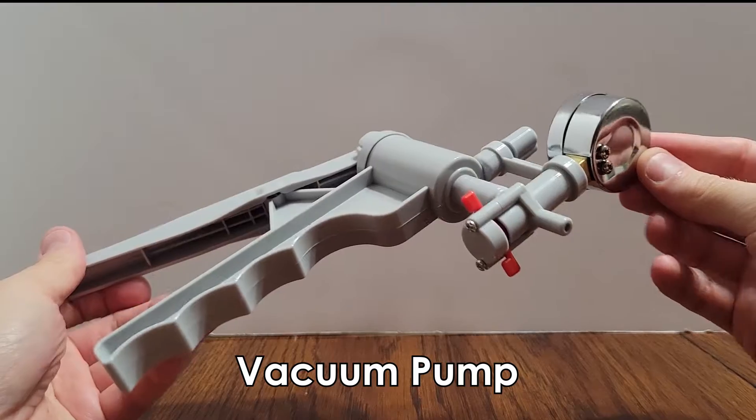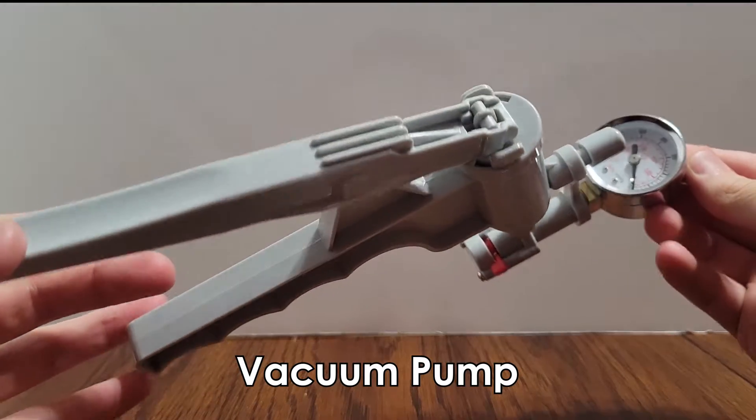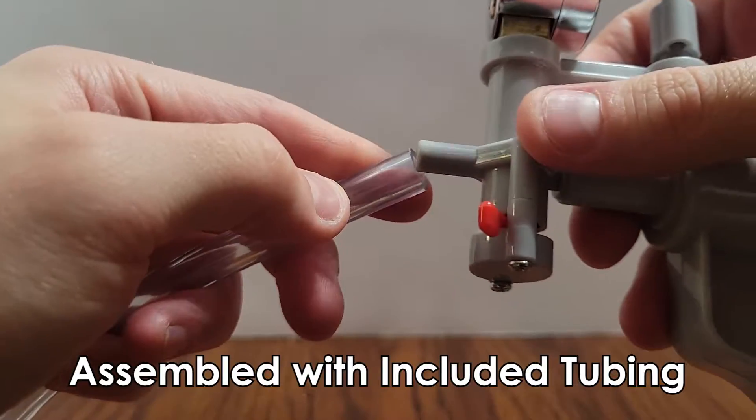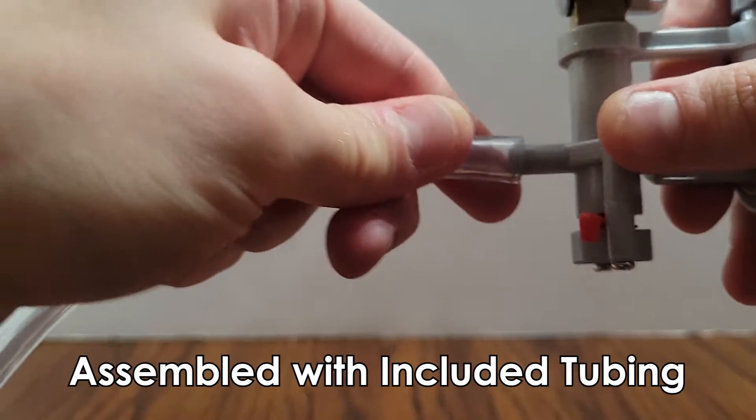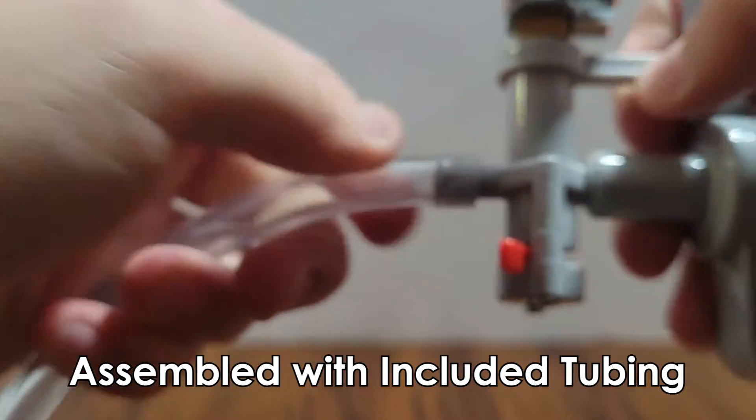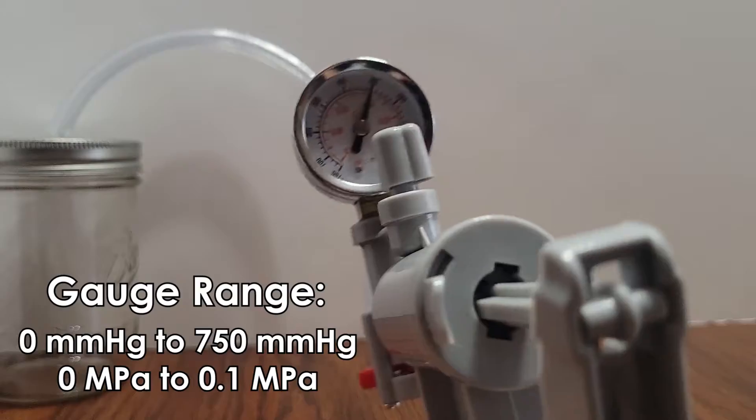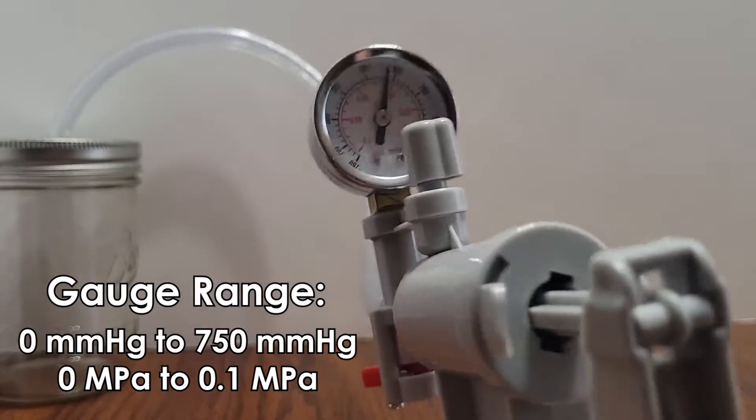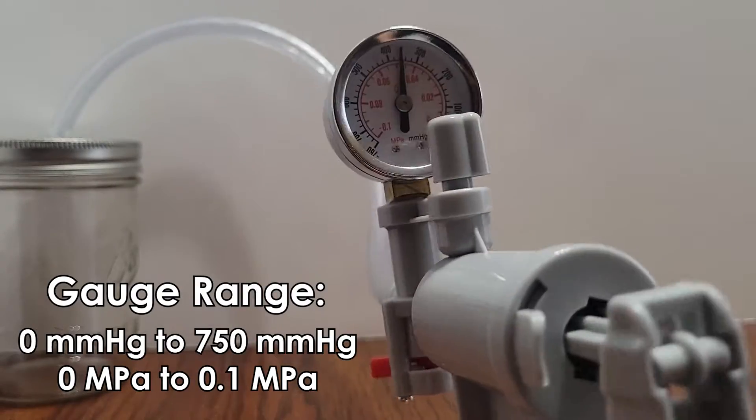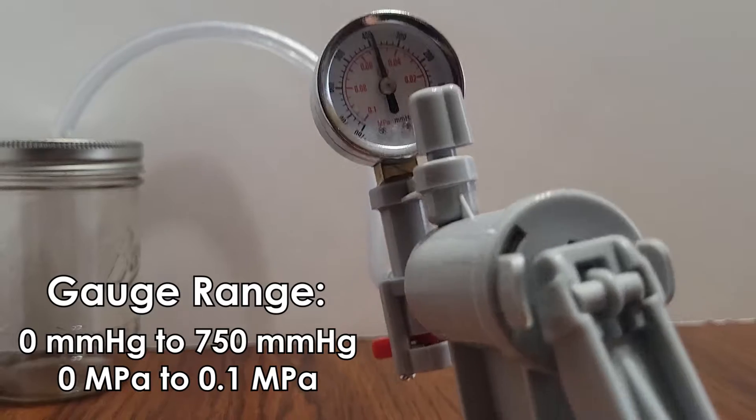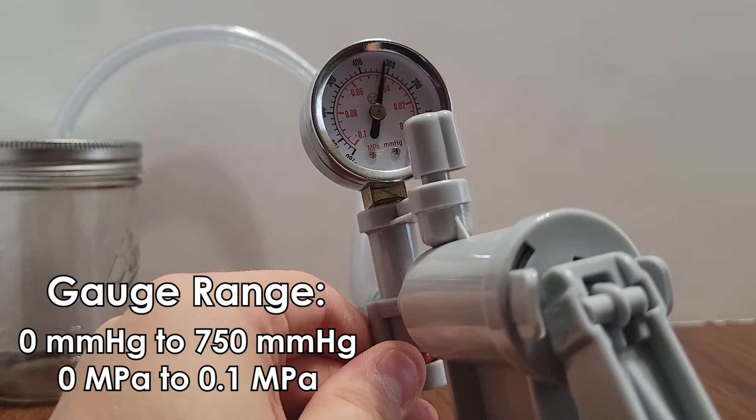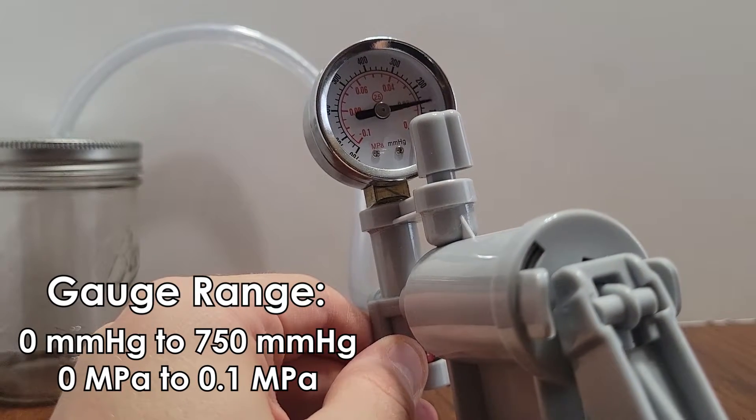Our vacuum pump that you see here is the perfect tool for teaching about the pressure in a vacuum. It comes shipped with a length of plastic tubing which can be attached to its front and used to connect your pump to whatever vessel you'll be drawing air from. It also features a gauge measuring up to 750 millimeters of mercury or 0.1 megapascals of negative pressure. There's also a quick release valve for when you're done using your pump to create a vacuum.